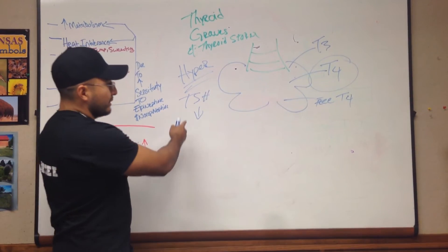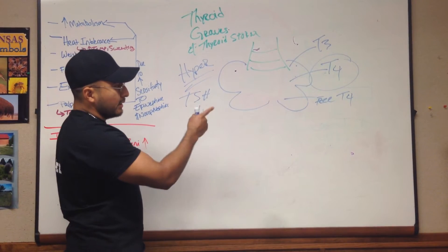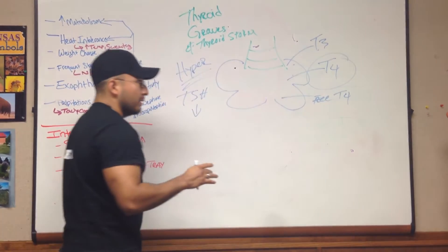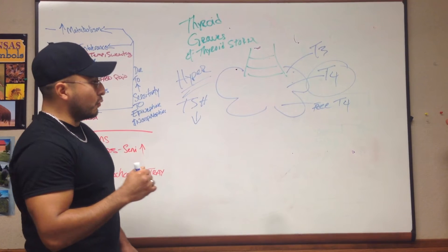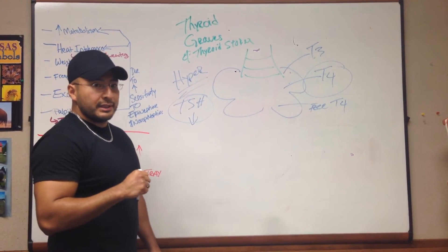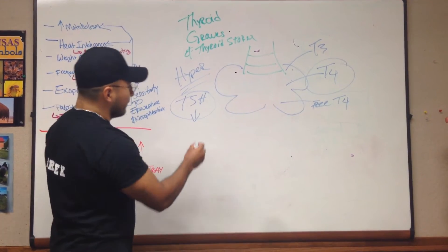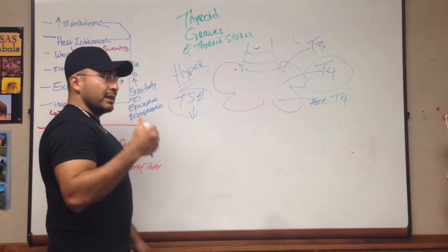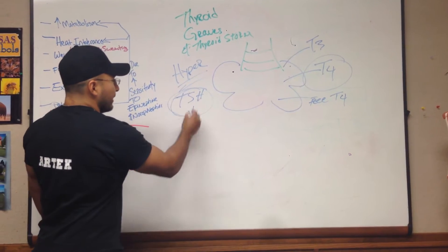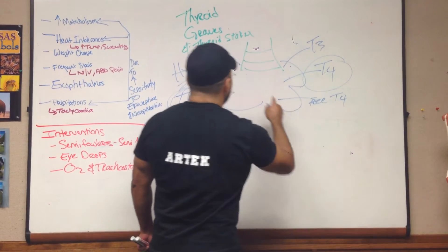Now, why is that? Remember, TSH is secreted to increase T3 and T4. So, the sole purpose is to produce more T3 and T4. If your body is already producing T3 and T4, then there is no need for your body to secrete thyroid stimulating hormone. Therefore, it will be decreased. So, when you do lab work, you're looking for TSH. Is it higher, is it normal, or is it decreased? Well, if it's decreased, then you know that something else is causing your body to produce T3 and T4.